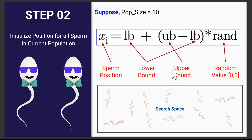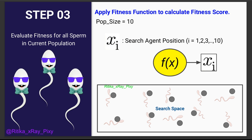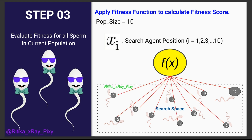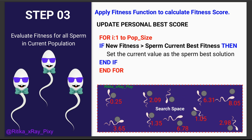The next step is to initialize the position for all sperms. We randomly initialize a population of N sperm cells within the boundaries of the solution space. Each sperm cell is a candidate solution represented as a vector in the solution space — a point in multi-dimensional search space. Then we evaluate the fitness score for all. Each candidate's fitness score is its personal best score, and we update it if a new score is better.